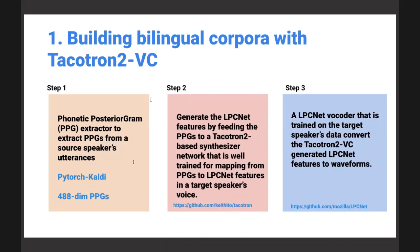The PPG features are then converted to LPC Net features by adding the target speaker's voice-related features. LPC Net features capture the voice quality of the speaker as well. In step two, conversion of speaker-independent features to target-speaker-dependent features happens. Then there is the vocoder part which converts these features to speech signals.